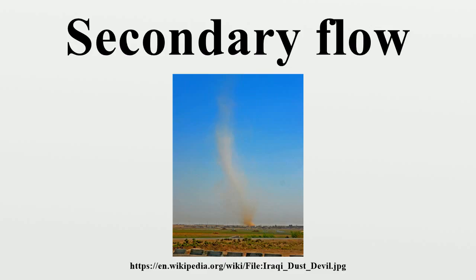However, in real flow situations, there are regions in the flow field where the flow is significantly different in both speed and direction to what is predicted for an inviscid fluid. Using simple analytical techniques, the flow in these regions is the secondary flow. These regions are usually in the vicinity of the boundary of the fluid adjacent to solid surfaces where viscous forces are at work, such as in the boundary layer.